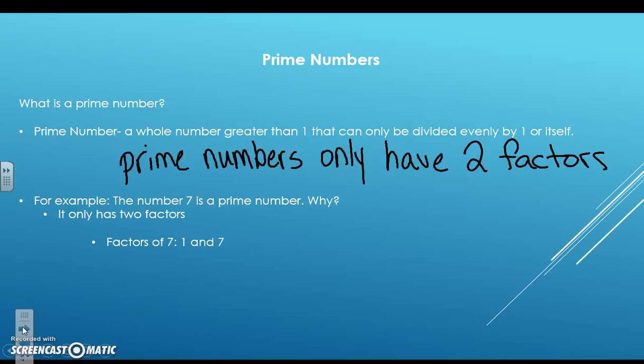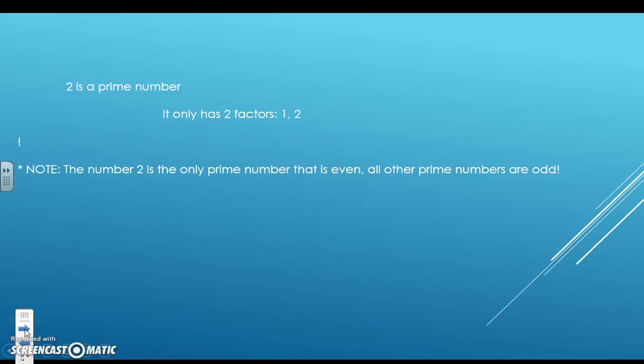For example, 7 is a prime number because it only has two factors: 1 and 7. 2 is also a prime number, it only has two factors: 1 and 2. The number 2 is the only prime number that is even. All other prime numbers are odd.